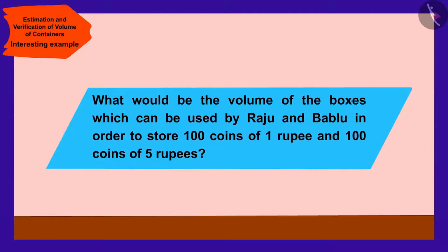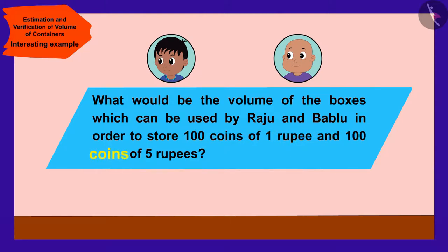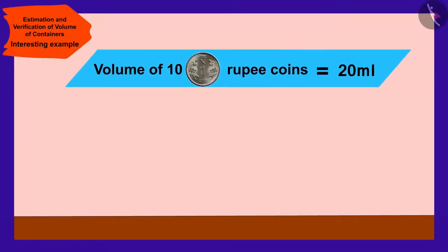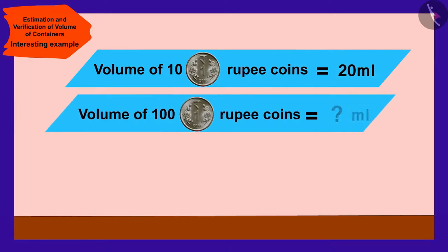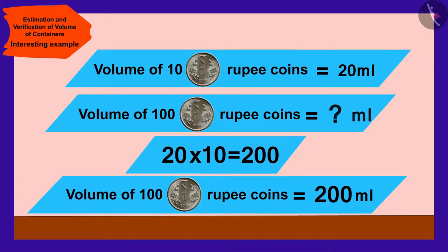Children, can you now find out what would be the volume of the boxes which can be used by Raju and Bablu in order to store 100 coins of 1 rupee and 100 coins of 5 rupees? If you wish, you can stop this video and think of the answer. The volume of 10 one-rupee coins is 20 ml, so 100 coins would be 20 times 10, or 200 ml.